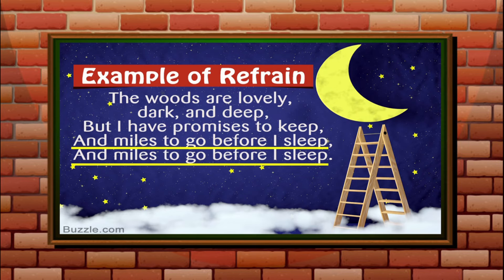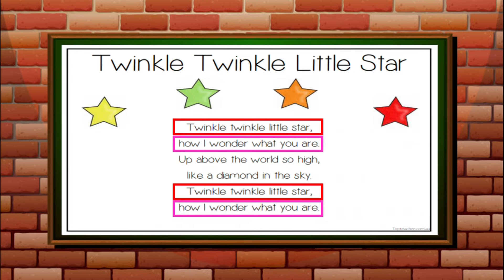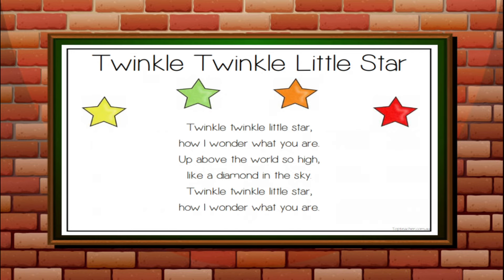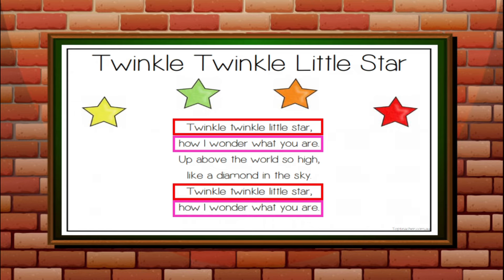Let's have another example. 'Twinkle, twinkle, little star. How I wonder what you are. Up above the world so high, like a diamond in the sky. Twinkle, twinkle, little star. How I wonder what you are.' As we can see in this poem, line one — 'Twinkle, twinkle, little star' — is repeated in line five. And line two — 'How I wonder what you are' — is also repeated in line six. This is an example of a refrain.